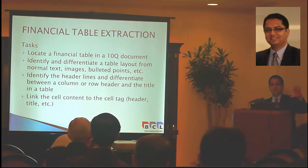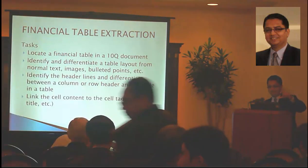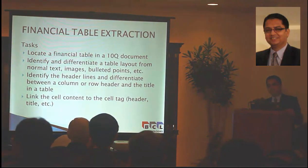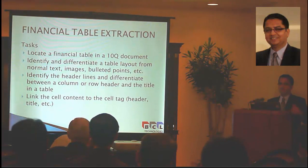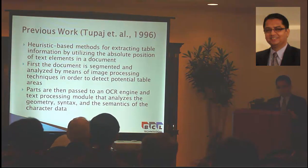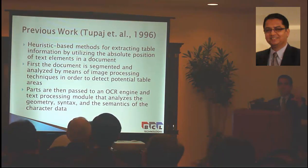Identify the header lines and differentiate between column headers, row headers, and the title in the table. Once you have identified the table, go inside and try to understand the content and link the cell content to cell data. Overall, we are trying to first identify spatially what is a table, then go inside the table and decide what kind of financial table it is and do identification within the cells. To give you some context, in our previous work in 1996, we did table identification and table location using a heuristic-based system for extracted tables.